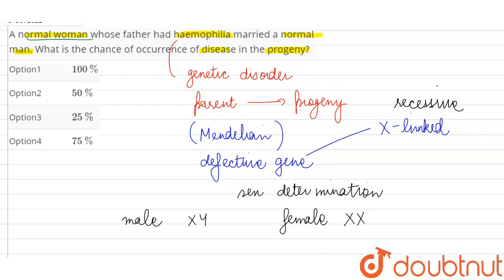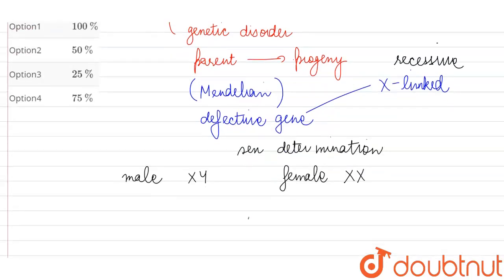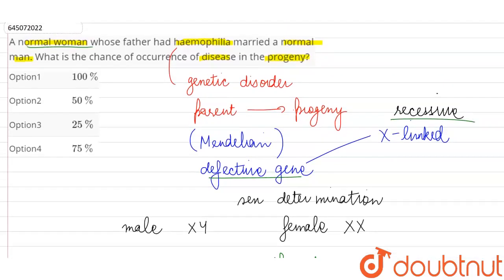So a normal woman means that she is unaffected by haemophilia, but just because she is not haemophilic doesn't mean she cannot be a carrier of the defective gene. Because it's a recessive gene, it is possible that she has received it from her parents but it has not been able to express itself.